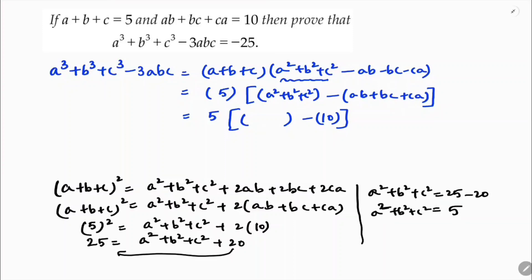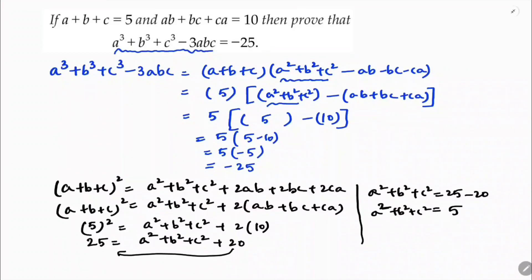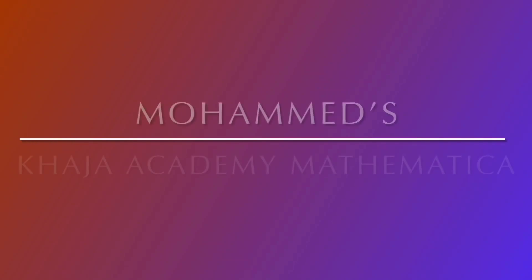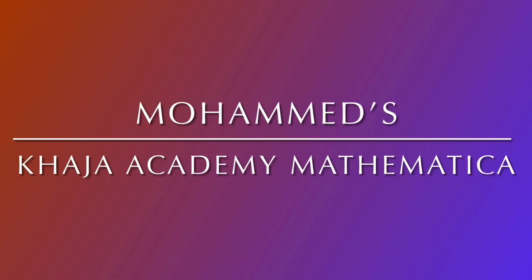Now substituting back: a square plus b square plus c square is 5, so the expression becomes 5 times 5 minus 10, which is 5 times minus 5, giving minus 25. Therefore a cube plus b cube plus c cube minus 3abc equals minus 25.